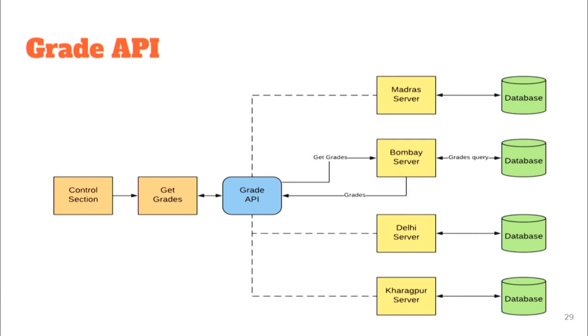My name is Arkham and I'll discuss the grade API and how we can secure all the APIs developed so far. The grade API gets the grades of a student depending on the query made by the user. From the control section interface, the API is called, connects with the appropriate platform — such as a Madras or Bombay server — which fetches the grades from its database and returns them to the API and back to the control section.